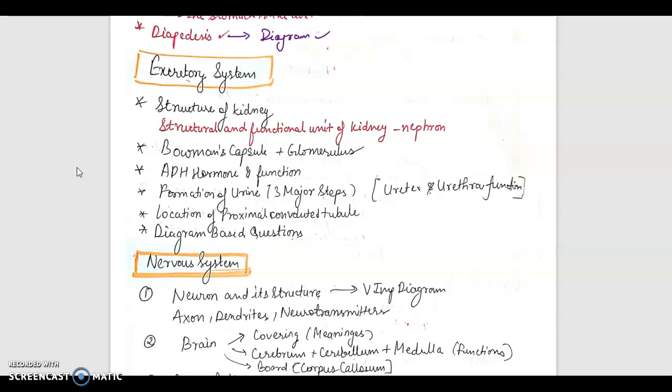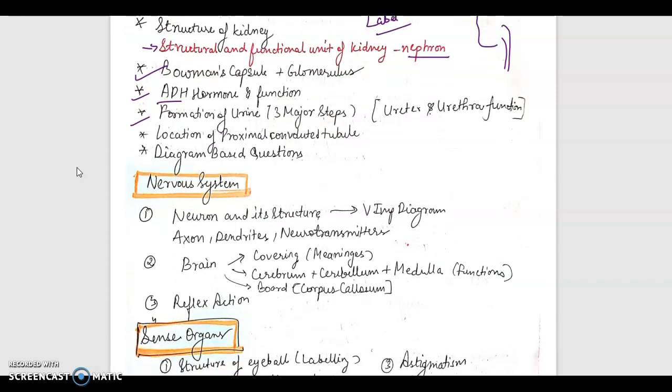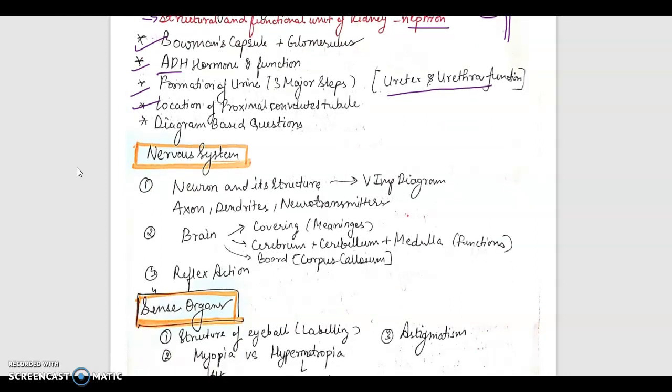Next is excretory system. The structure of kidney. A very frequently asked question is structural and functional unit of kidney, that is nephron. And yes, the diagram of kidney, Bowman's capsule and glomerulus. Please label the diagram properly. In case you do not, your marks will be deducted for the same. Then ADH hormone and its function - full form must be learned. Formation of urine, the three major steps required.